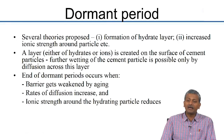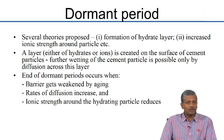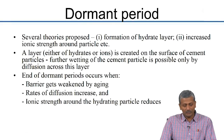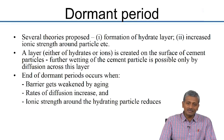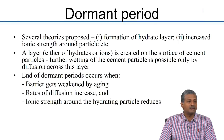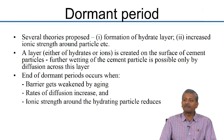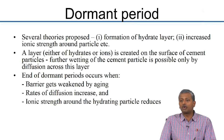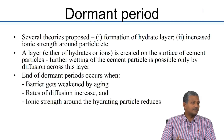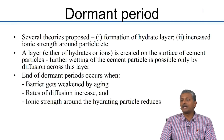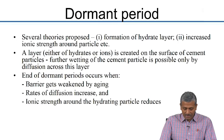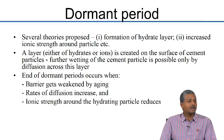The barrier layer theory is most agreed upon by researchers. The end of the dormant period occurs when the barrier weakens by ageing. Over about 3 to 4 hours, this very thin membrane slowly breaks. The rate of diffusion of water through the barrier increases enough to restart the reaction, and the ionic strength around hydrating particles decreases as precipitates like calcium hydroxide start forming, easing water entry to the unhydrated cement.